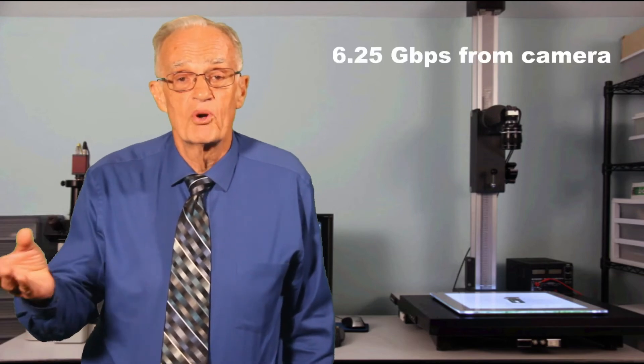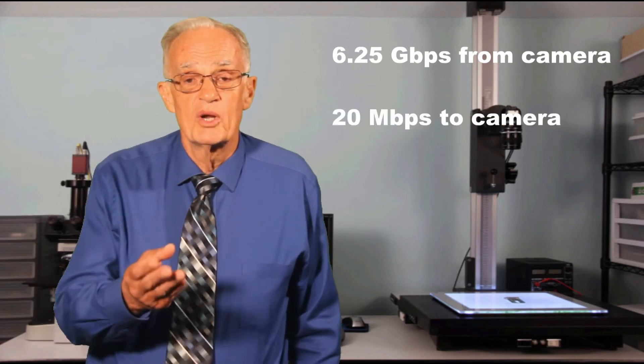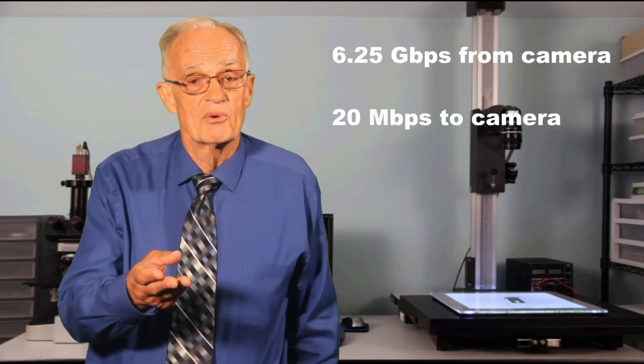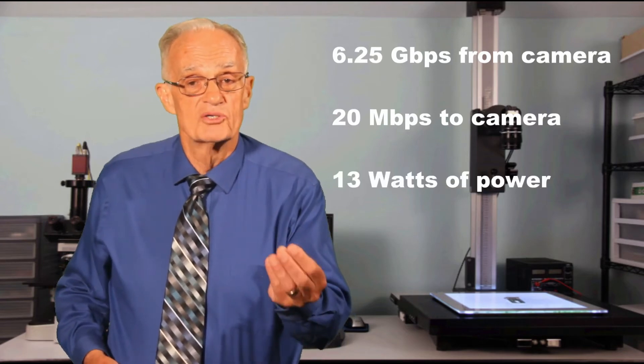Let's summarize what one coax cable between the camera and the frame grabber can provide. Up to 6.25 gigabits per second camera to frame grabber. More than 20 megabits per second frame grabber to camera. And 13 watts of power to the camera.